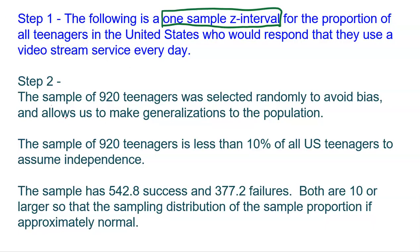Step two checks the necessary conditions. Even though we're not actually building a sampling distribution, the idea of a confidence interval stems from the sampling distribution, which should have the true P in the center and be normal. The first condition is that the sample must be random to avoid bias. The sample of 920 teenagers was selected randomly, allowing us to make generalizations from the data to the population. The second condition is that the sample must be under 10% of the population. There are probably millions of teenagers in the US, so 920 is definitely less than 10% of them, assuming independence between samples.